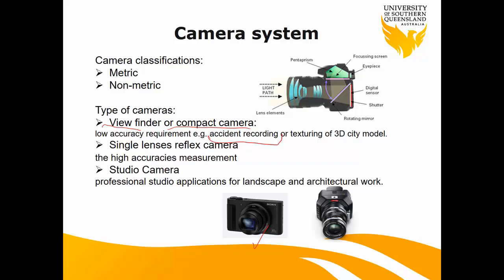A low-resolution job example is photographing an accident scene — some surveyors working with police put some scale bars, take a photo, and then do measurements and create a reconstruction of what happened. Another example is creating a 3D model of a city for planning purposes, not for surveying. As surveyors, we probably use a single lens reflex camera — a DSLR. It's called 'single lens reflex' because it has a rotating mirror.